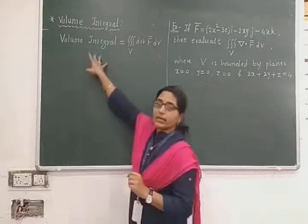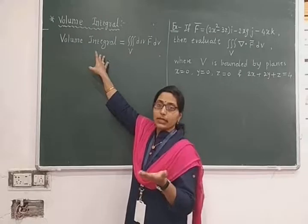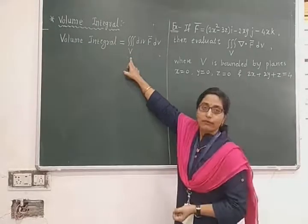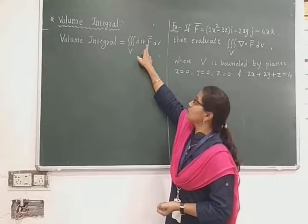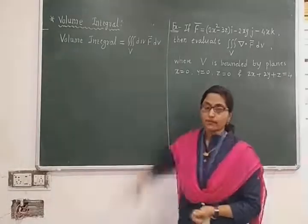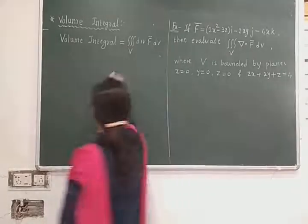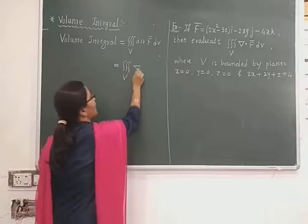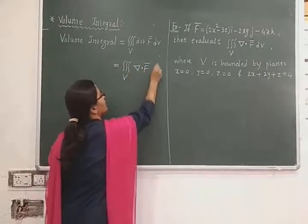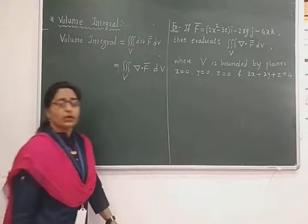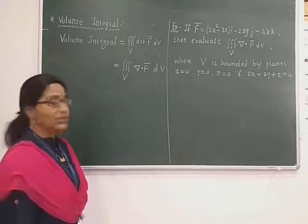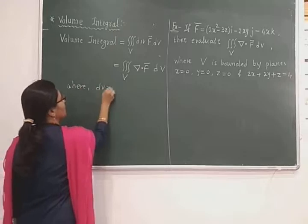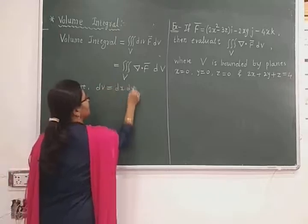And that's why if volume integral is asked, its formula is triple integration over V of divergence of F bar dV. And divergence means del dot F bar dV.